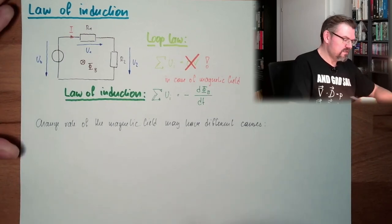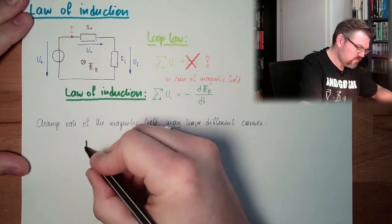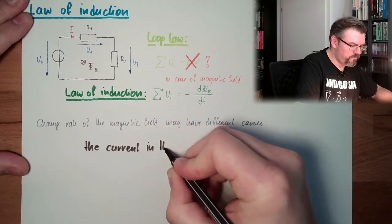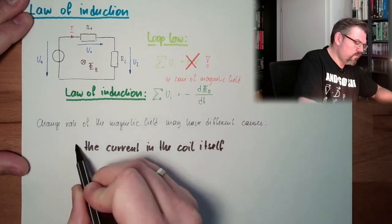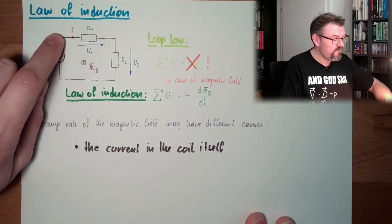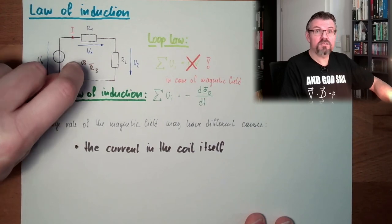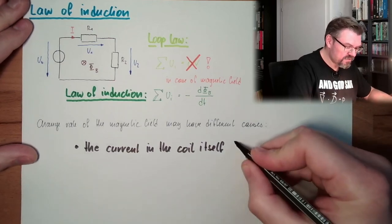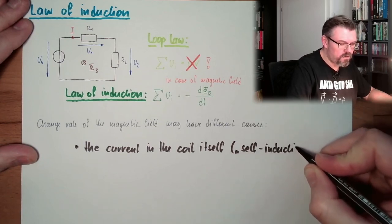One cause is the current in the coil itself. So if this current here is changing over time, if this is not a fixed value, if this is changing, then this current will produce a magnetic field, and if the current is changing, the magnetic field is changing, and so it is influencing itself. So this is self-induction.